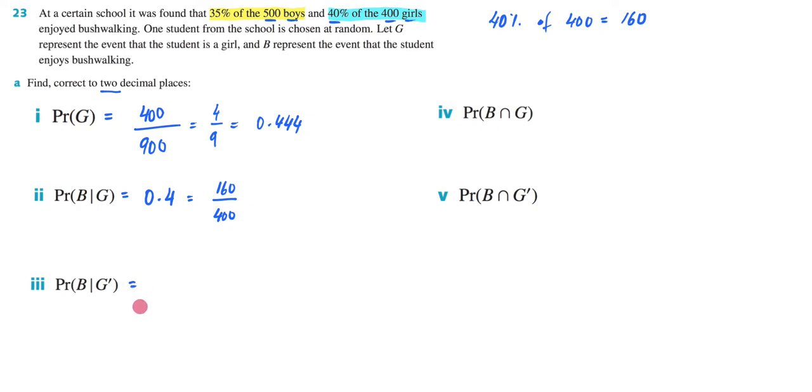But it's given to us straight in the question itself. Let's now go to the next one, which is asking us to find the probability they enjoy bushwalking, given they are a boy. So remember, the complement of G is that they're a boy. So the probability that they enjoy bushwalking, given that they're a boy. And again, this is given to us in the question. It's going to be 35%, which as a decimal would be 0.35.